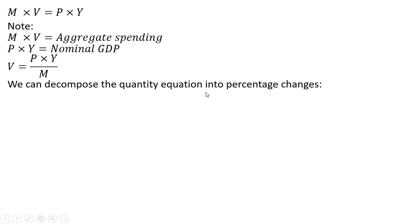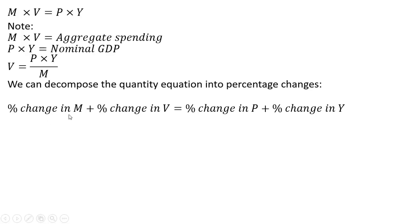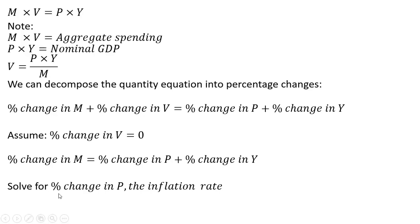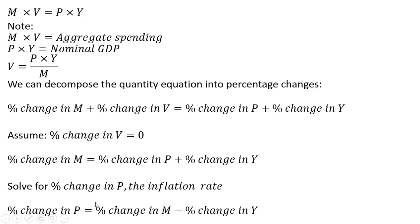We can decompose the quantity equation into percentage changes: the percentage change in the money supply plus the percentage change in velocity equals the percentage change in the price level plus the percentage change in real GDP. Assuming the percentage change in velocity is zero — a key feature of the quantity theory of money — the inflation rate equals the percentage change in the money supply minus the percentage change in real GDP.